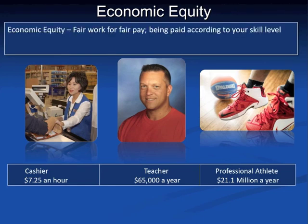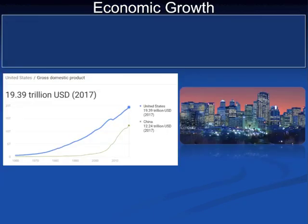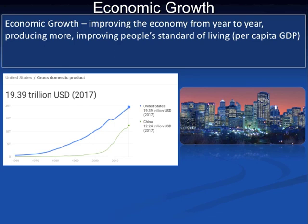Economic equity says you will be paid fairly according to the level of your skill. LeBron James is such a limited resource and so highly in demand that his income reflects that. Similarly, a teacher obtains skills through education and development of human capital and is paid more than a cashier at Walmart. When we discuss economic growth, GDP or gross domestic product is the key indicator — an increase in GDP allows the economy to produce more.